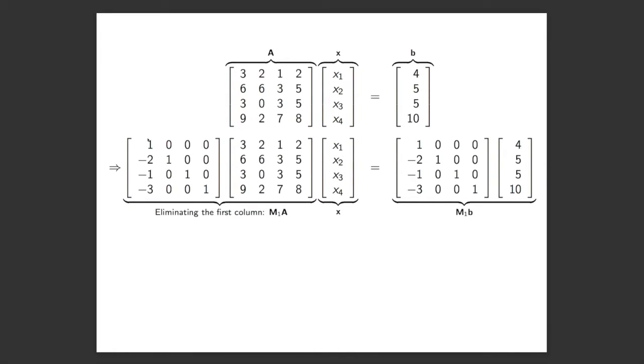So how can we do that? We can do that by applying this elementary matrix here, M1, and this elementary matrix subtracts 2 times the first row from the second row, subtracts 1 times the first row from the third row, and 3 times the first row from the fourth row. And of course, we've got to apply that to the right-hand side as well over here.